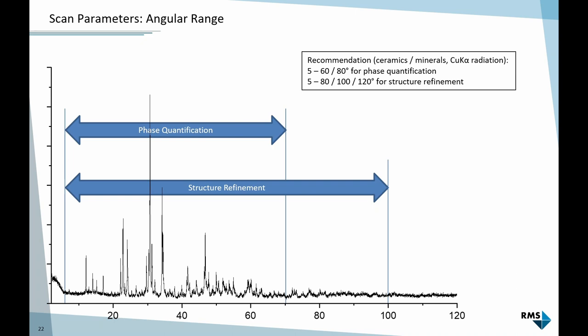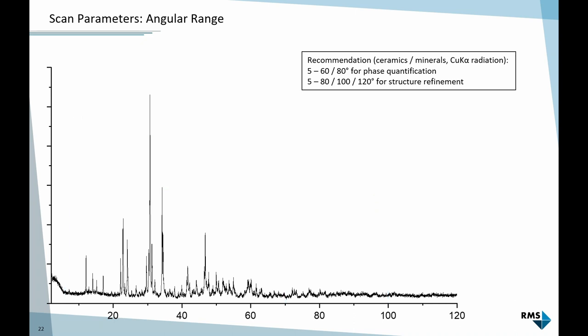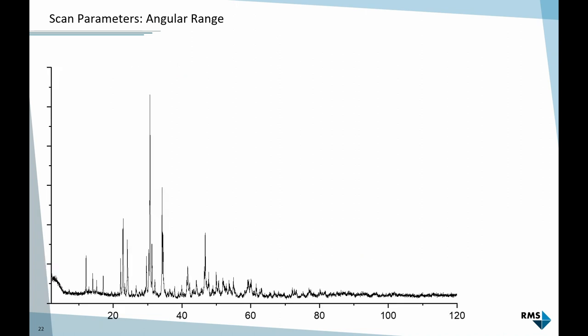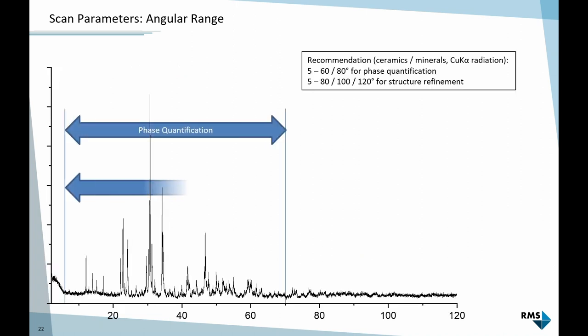This is for the ceramics I work with. In the previous example, we saw the pattern of corundum looks very different. It only starts at 25 degrees. So for you, this may be very different. Metals, for example, don't have any low angle peaks. They usually start around 25 degrees maybe. This is something you have to match to your own applications. But for my ceramics, that's what I work with.